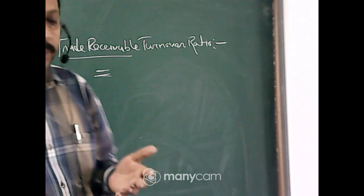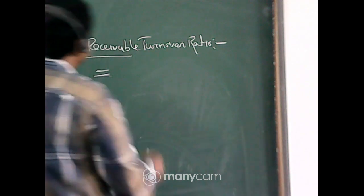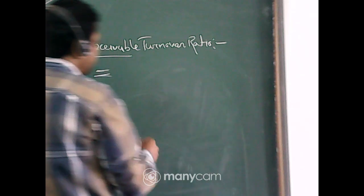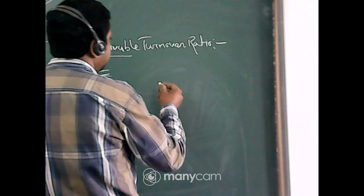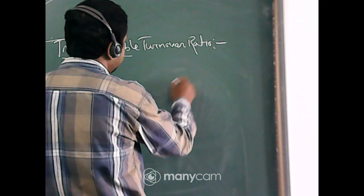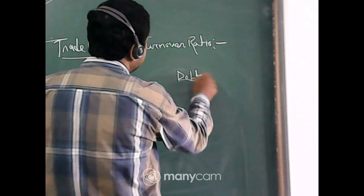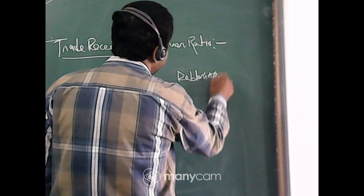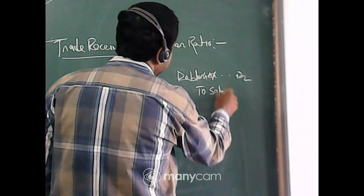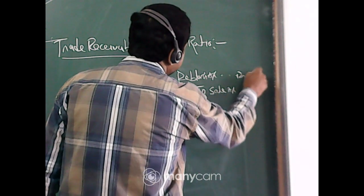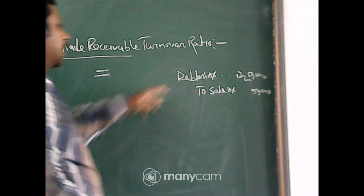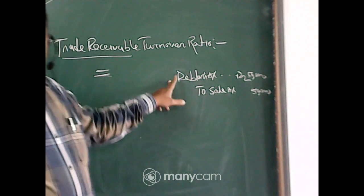Let me explain with an example. Suppose in the month of April, total credit sales are rupees 50,000. What will be the journal entry? Debtors account debit to sales account — that is 50,000 debit and 50,000 credit.